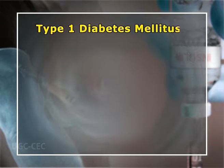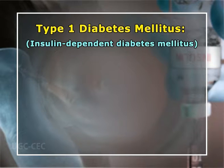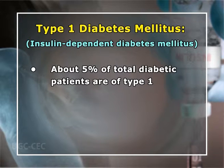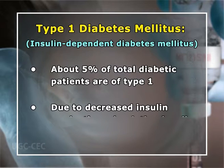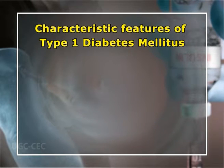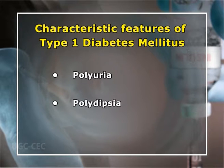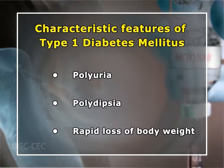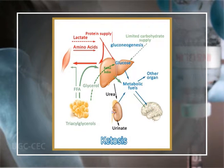The disease may be classified as follows. Type 1 diabetes mellitus, formerly known as insulin-dependent diabetes mellitus, accounts for about 5% of total diabetic patients. Here, circulating insulin is deficient due to decreased insulin production; circulating insulin is very low and these patients are dependent on insulin injections. Onset is usually below 30 years of age, commonly during adolescence. Characteristic features are polyuria, polydipsia, and rapid loss of body weight; these patients are more prone to develop ketosis.